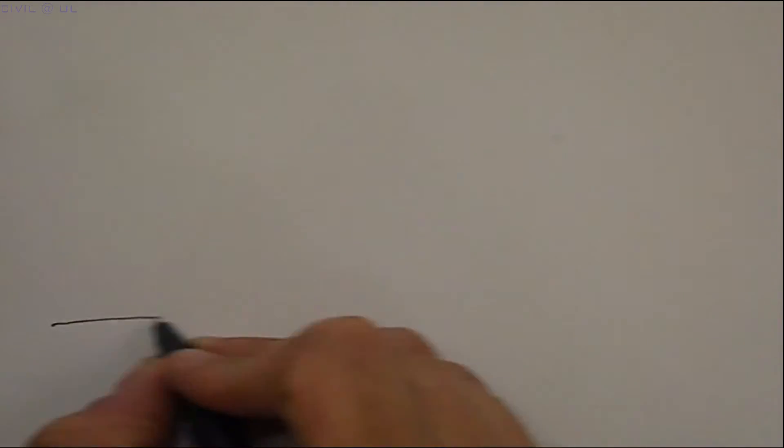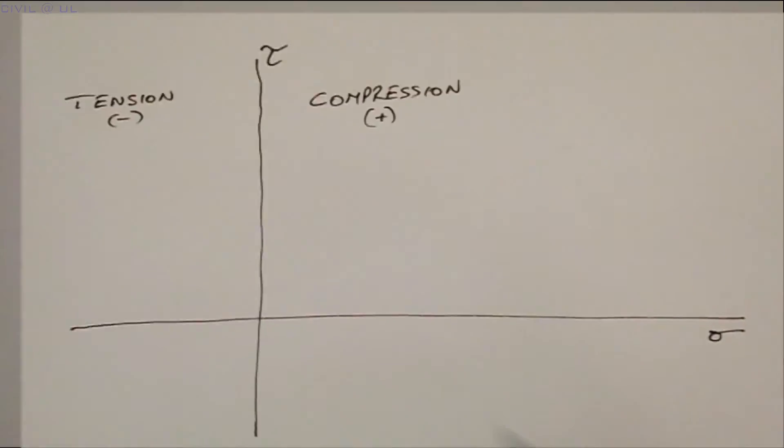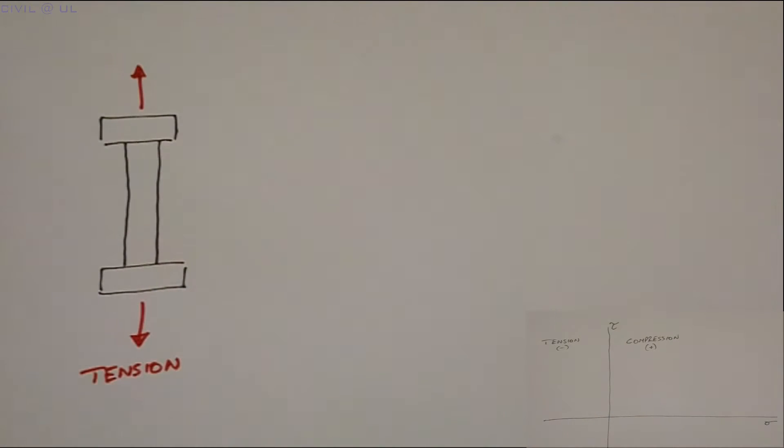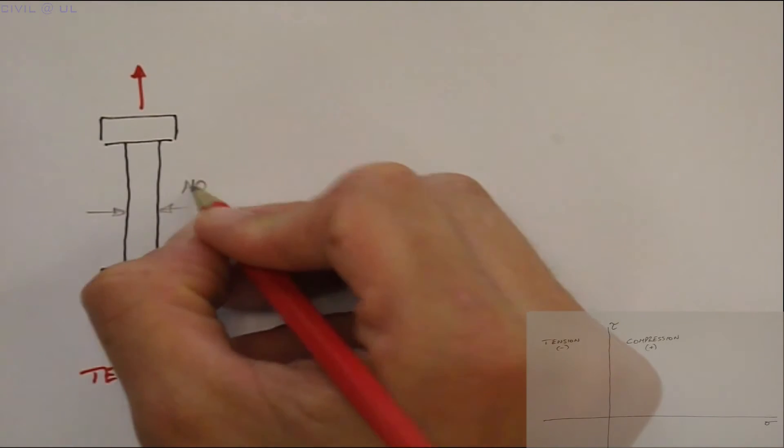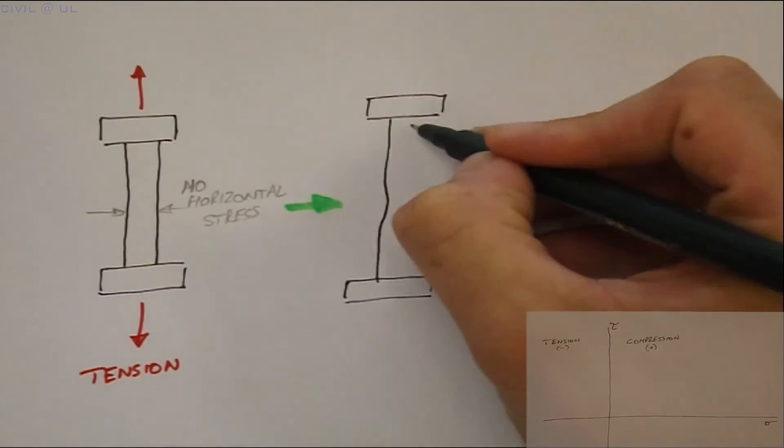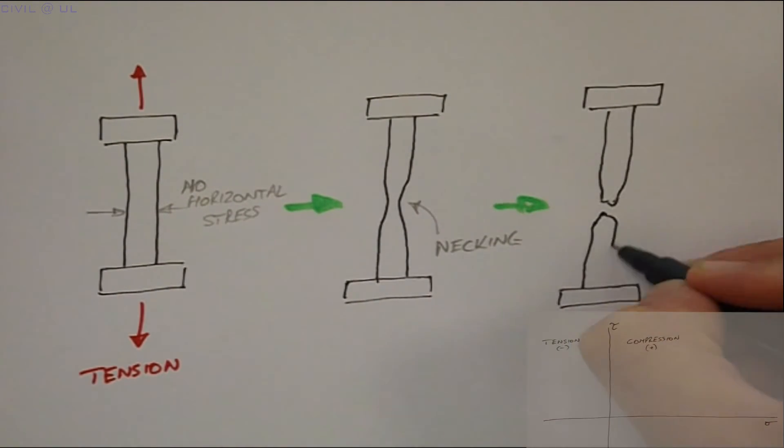Starting with steel and adopting the convention that compressive stresses are positive because soils have no tensile strength, we can plot the failure of a specimen tested in tension. As the sample is stretched, there is no applied horizontal stress. The sample lengthens and starts to neck or reduce in diameter until it eventually fails at an ultimate tensile failure stress.